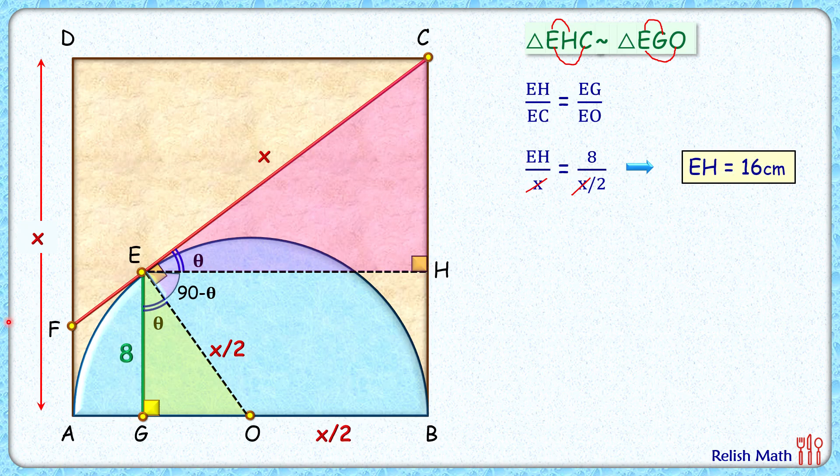Now here if you'll see, EG length is 8 centimeters, so HB length will also be 8 centimeters, and CH length will be the full length x minus 8.